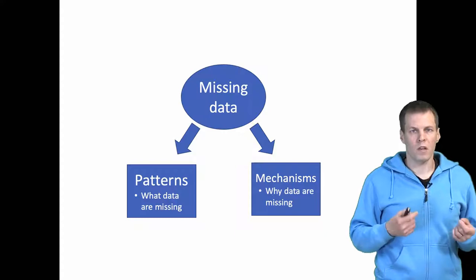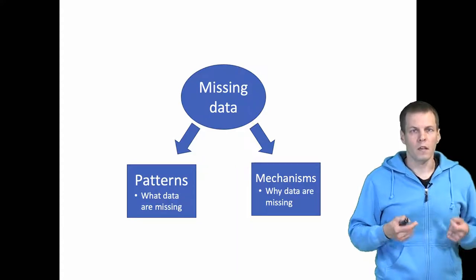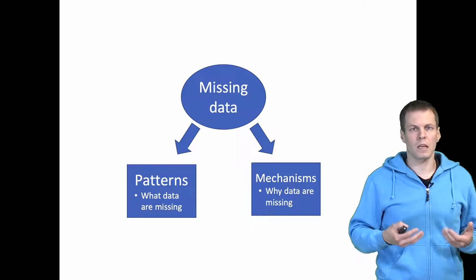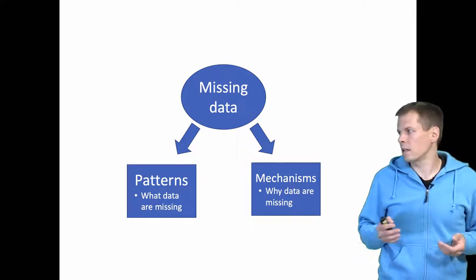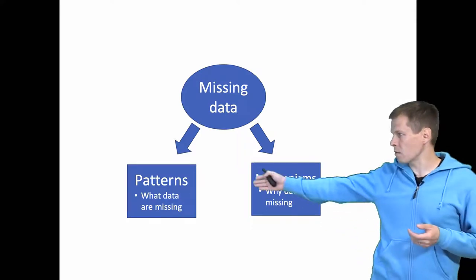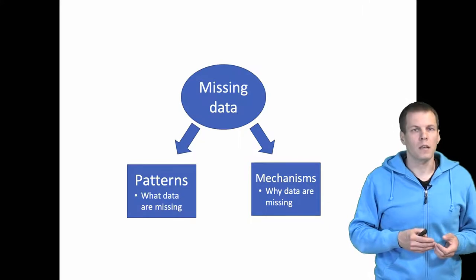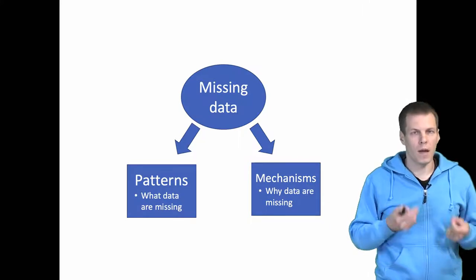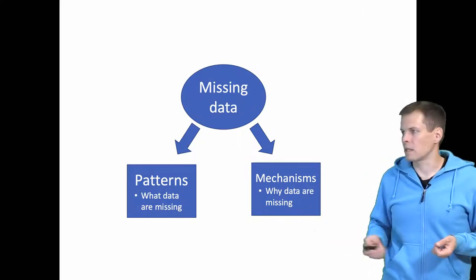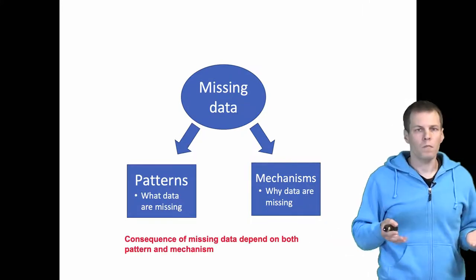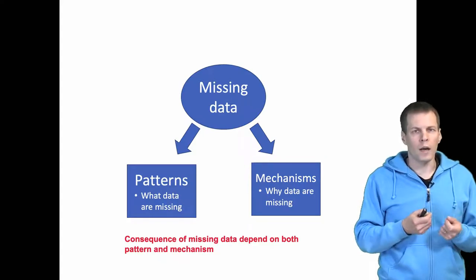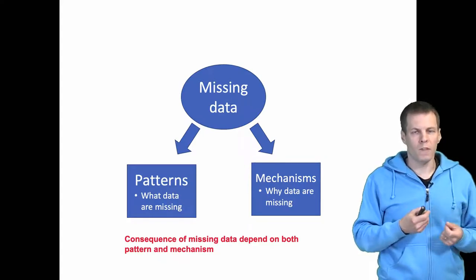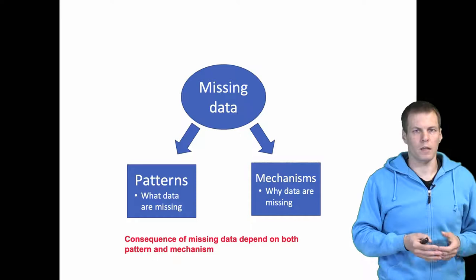In more general cases, when the amount of missingness is non-trivial, the impact of that missing data depends on two things: the patterns — so what data are missing — and the mechanisms — so why are the data missing. To understand why both of these matter, we will take a look at an example.